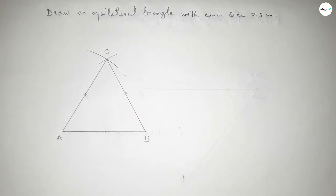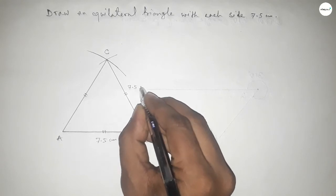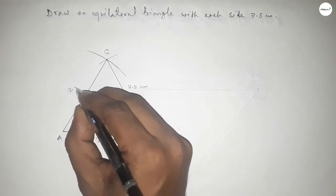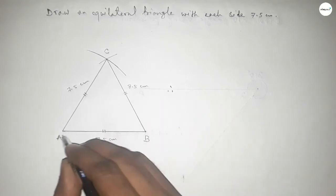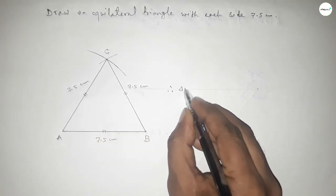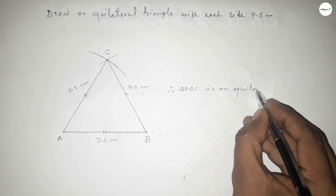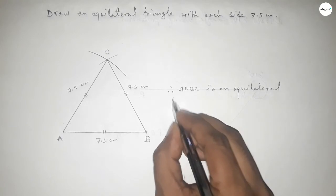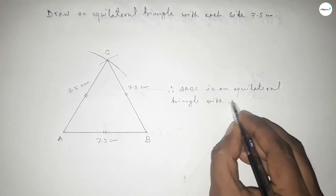So now mark the equal sign on three sides. So this is 7.5 centimeter, this is 7.5 centimeter, and this is also 7.5 centimeter. So triangle ABC, triangle ABC is an equilateral triangle with each side 7.5 centimeter.